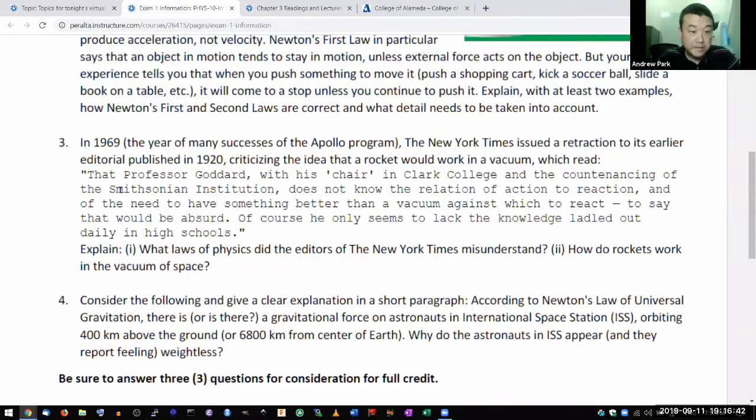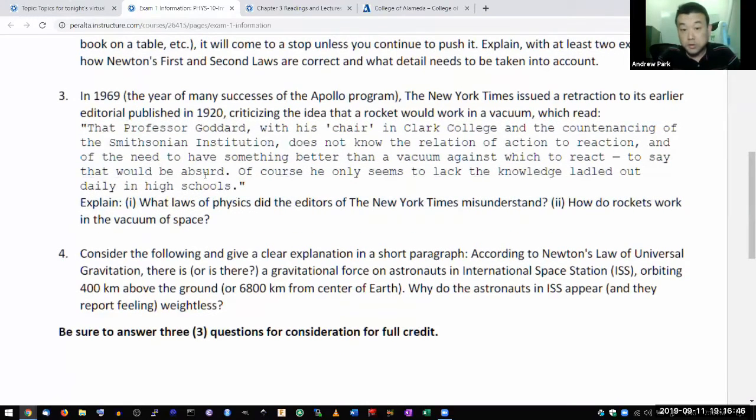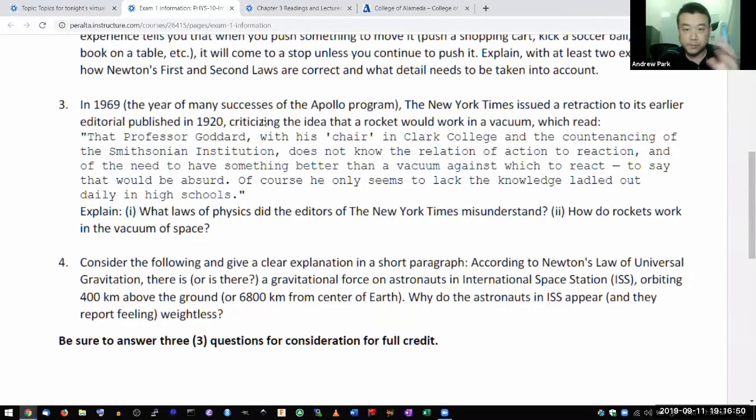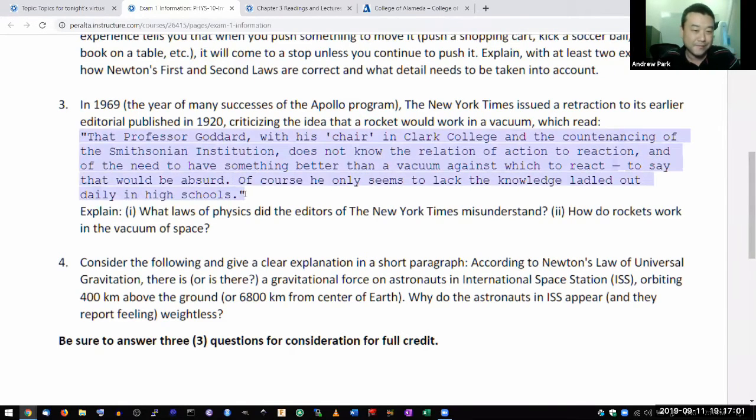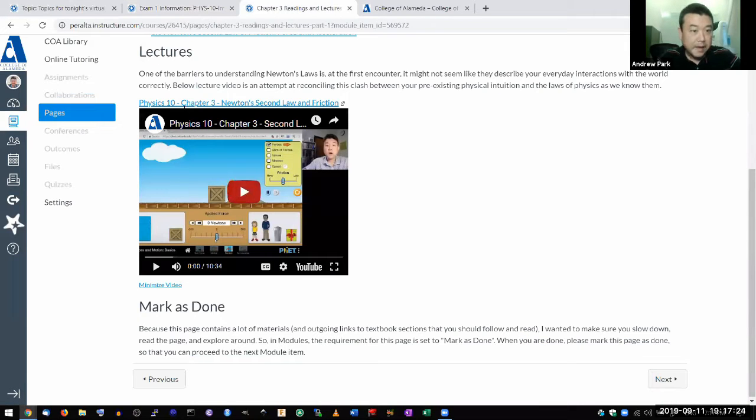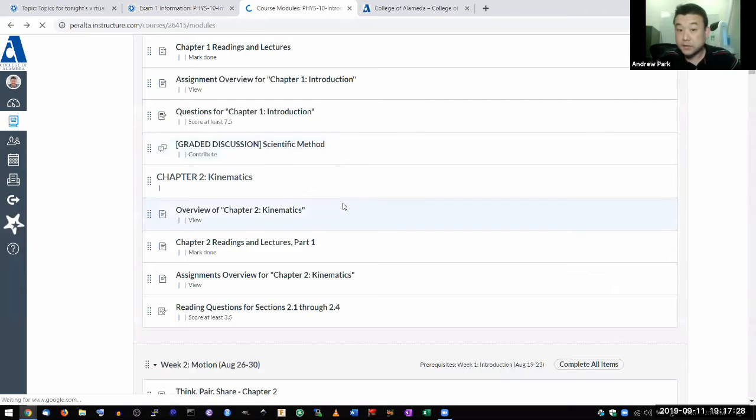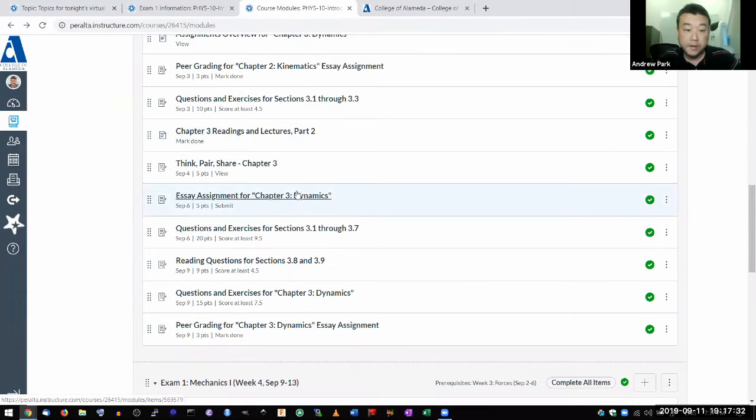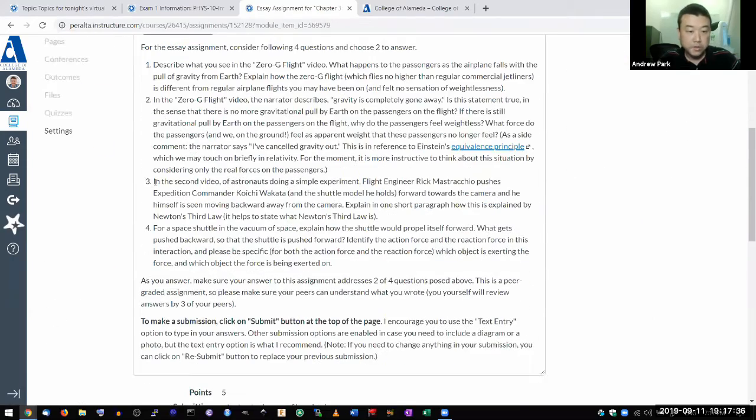So question three is an example of that where this question relates to Newton's third law. And I say multiple times in multiple places in the course that Newton's third law is the most often misunderstood law. And the criticism of the rocket science at the time in 1920s is an example of that misunderstanding of presumably very educated people, people on the editorial board of the New York times in 1920s, almost a hundred years ago. And that aspect of Newton's third law has been very adequately covered in the essay assignment for chapter three.